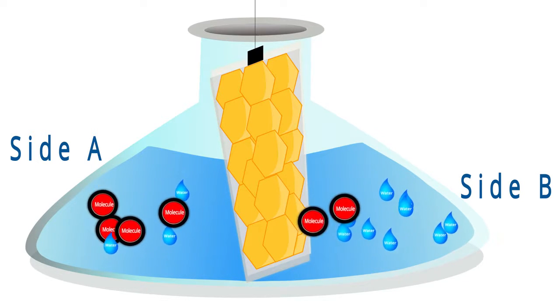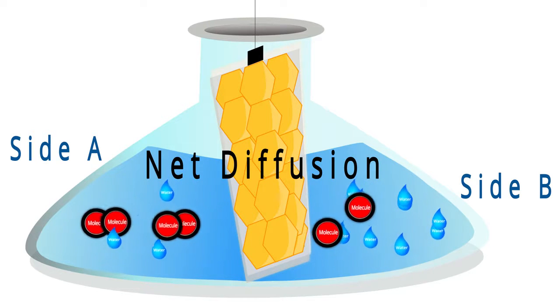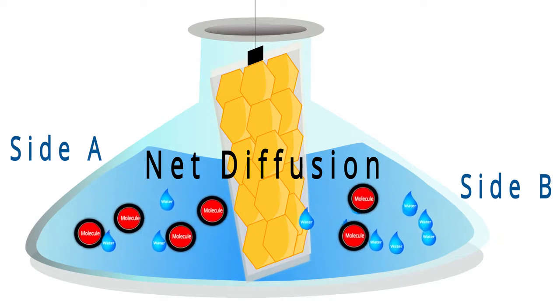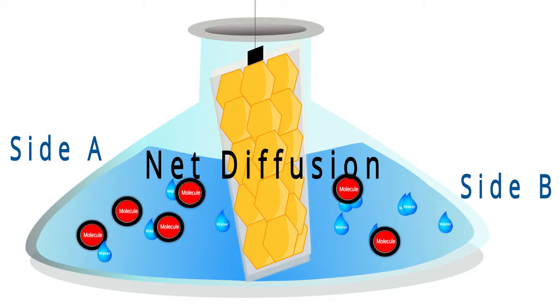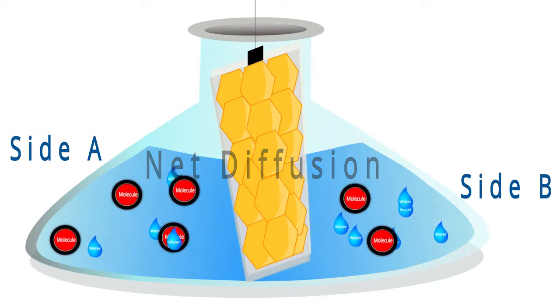The amount of materials moving from side to side is called net diffusion. Net diffusion moves down the concentration gradient from areas of high concentration to areas of low concentration.